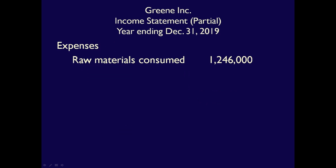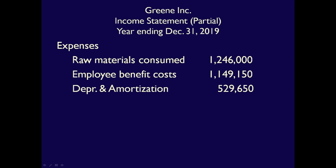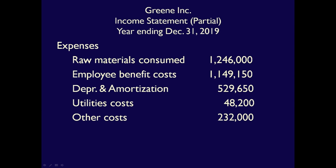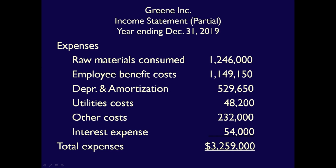Therefore, for Green Inc., the statement would present: raw materials consumed of $1,246,000; employee benefit costs from all departments of $1,149,150; depreciation and amortization expense for the whole company of $529,650; utility costs of $48,200; other costs of $232,000; and finally interest expense of $54,000.